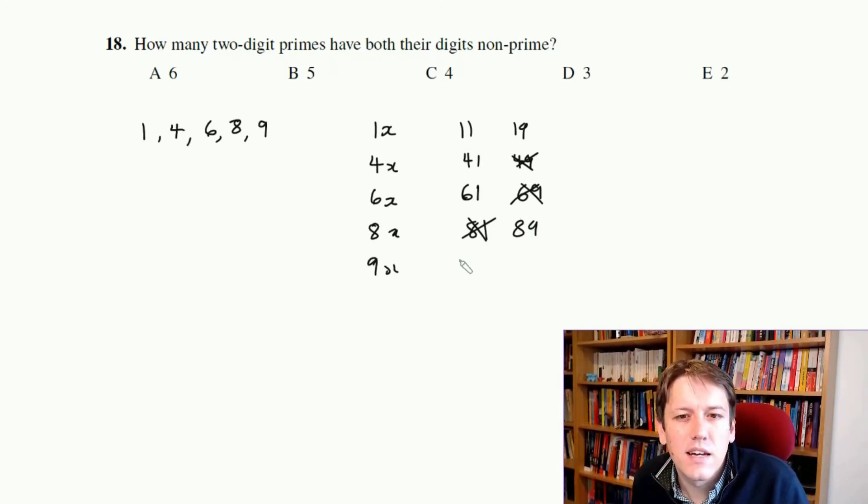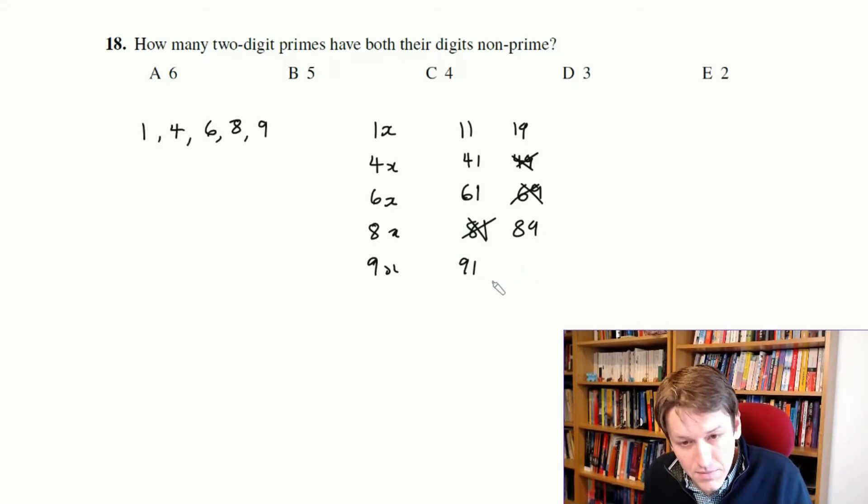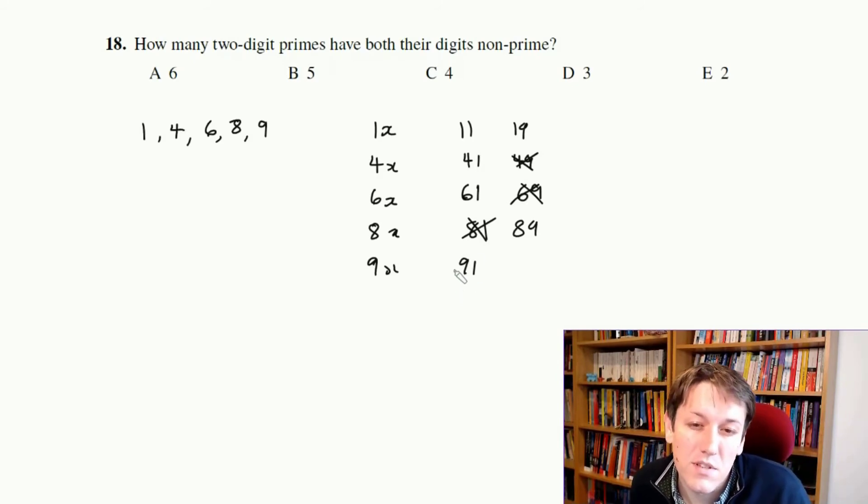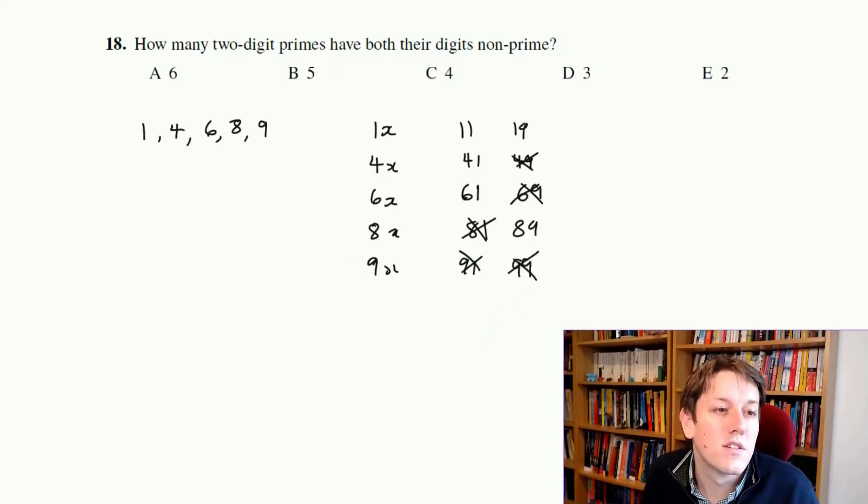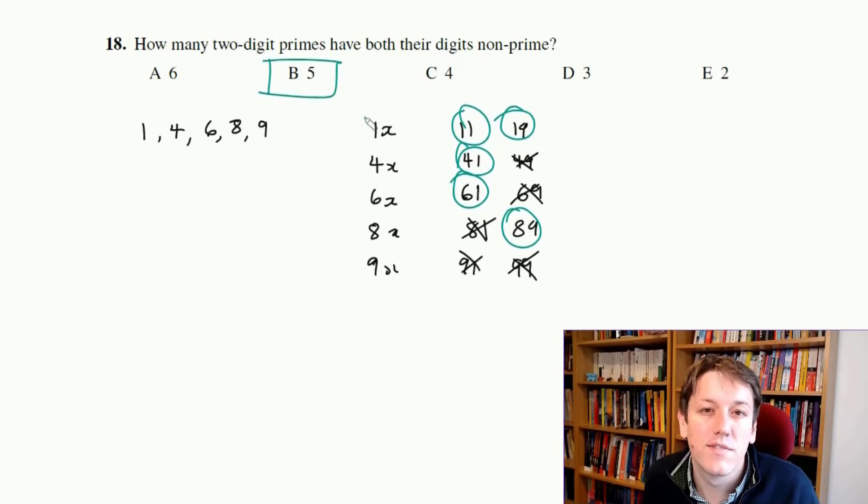And then for 9x, I've got to think, well, is 91 a prime? That doesn't have 2, 3, or 5 as a factor, but it is 7 times 13, so that's not prime. And 99 is 3 times 33, so that's not prime. So we've exhaustively searched them all, and there's 1, 2, 3, 4, 5, and so the answer is B, 5.